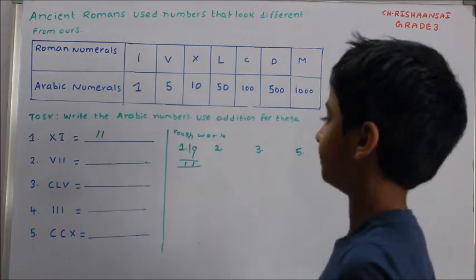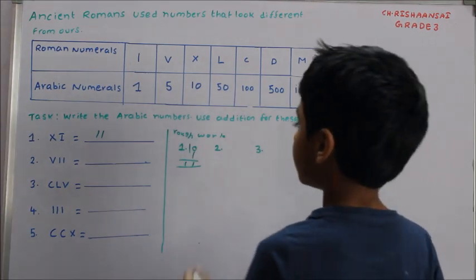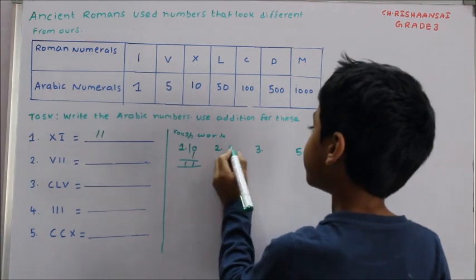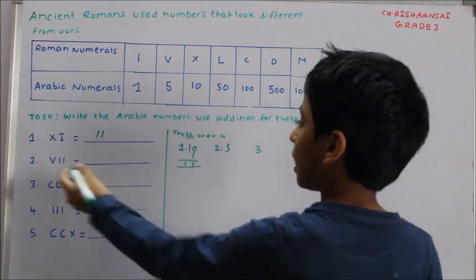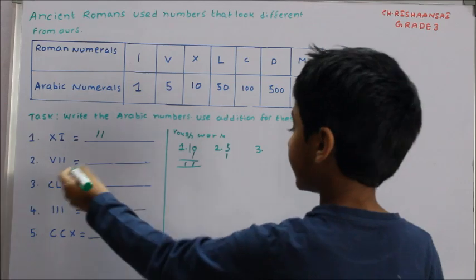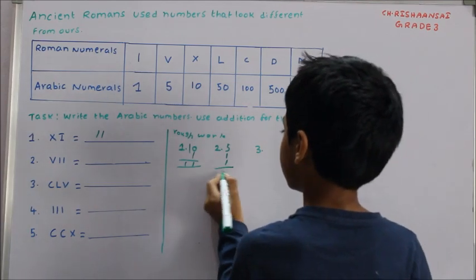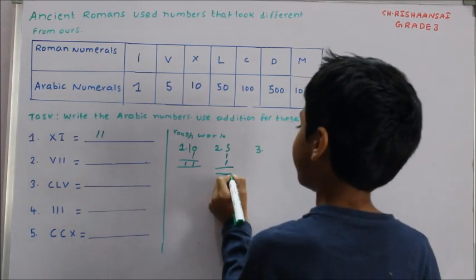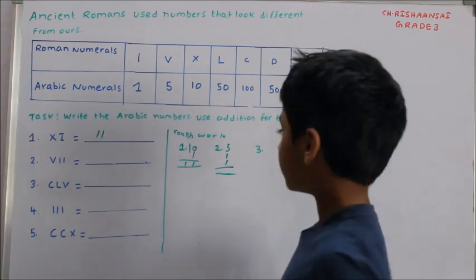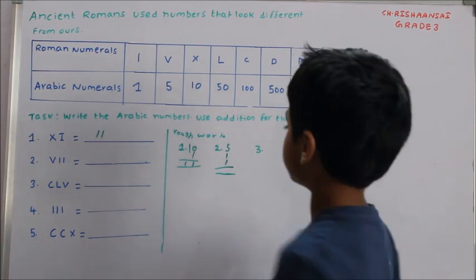VII — V means 5, I means 1, and again I means 1. Now we need to add it. 5 plus 1 is 6, 6 plus 1 is 7. So 7 is the answer.